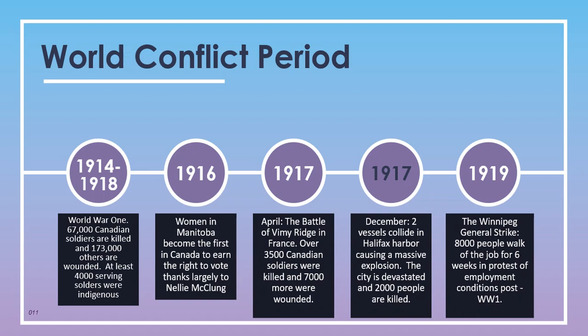In April 1917, specifically Easter weekend, was the Battle of Vimy Ridge in France — over 3,500 Canadian soldiers were killed and more than 7,000 were wounded. It's a significant battle we'll cover in detail, particularly regarding Canadians finally starting to see themselves as Canadian rather than British. Also in 1917, in December, two ships collided in Halifax Harbor causing a massive explosion that devastated the city and killed nearly 2,000 people.